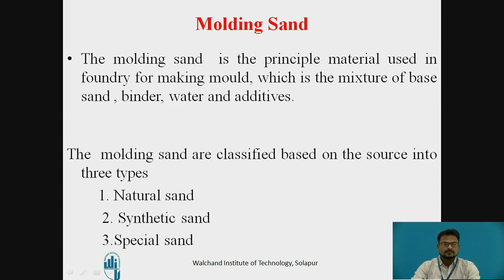The moulding sand is the principal material used in foundry for making a mould. It is a mixture of base sand, binder, water and additives. Moulding sands are classified based on their sources or ingredients into three different types: natural sand, synthetic sand, and special sand.